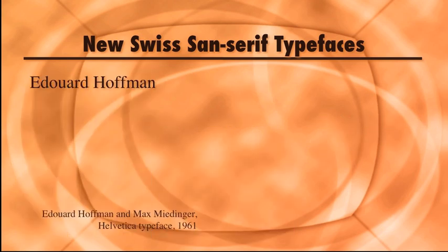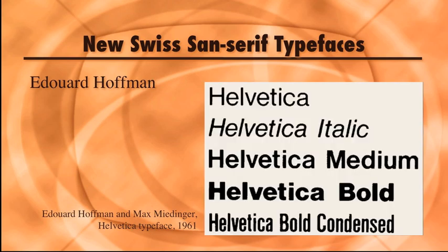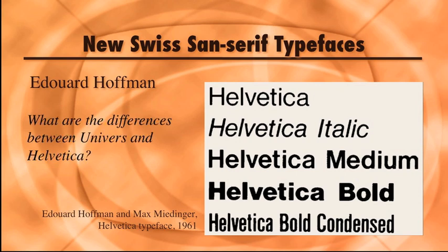Helvetica came about as Edward Hoffman of the Haas Foundry in Switzerland upgraded fonts designed in the 19th century. Its well-defined forms and rhythm of positive and negative shapes made it one of the most specified typefaces used internationally during the 1960s and 70s. After a little research, be able to tell me what are the differences between the Universe and Helvetica fonts.